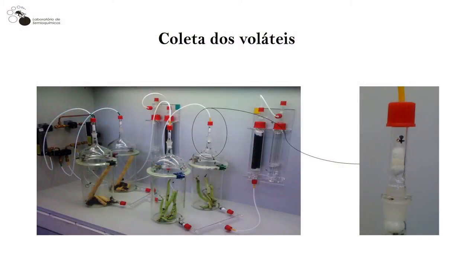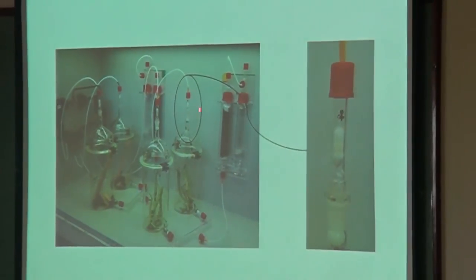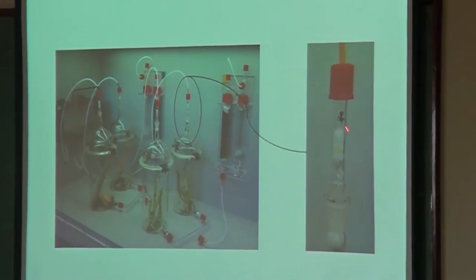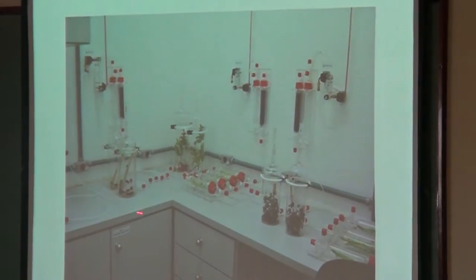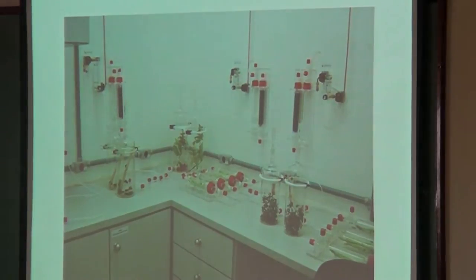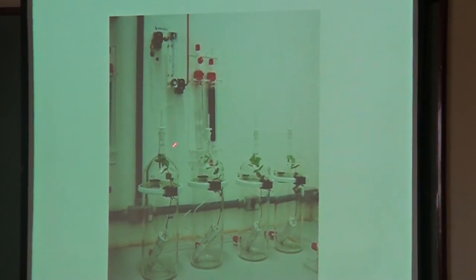Para coletar voláteis, utilizam-se câmaras de aeração, sempre fazendo coletas de machos e fêmeas separados em câmaras distintas, pois os feromônios são sexo-específicos. Uma bomba de vácuo puxa o ar, que entra, é umidificado e purificado por coluna de carvão, dividido entre câmara de macho e de fêmea. Os voláteis ficam retidos em coluninhas com polímero sorvente. O laboratório consegue fazer até 64 coletas simultaneamente. Existe também coleta de voláteis de plantas, usando o mesmo processo com polímeros adsorventes.